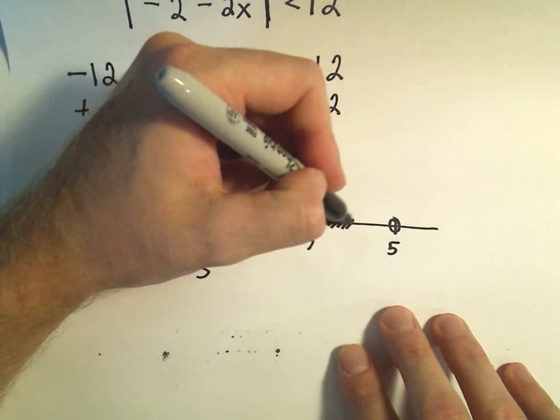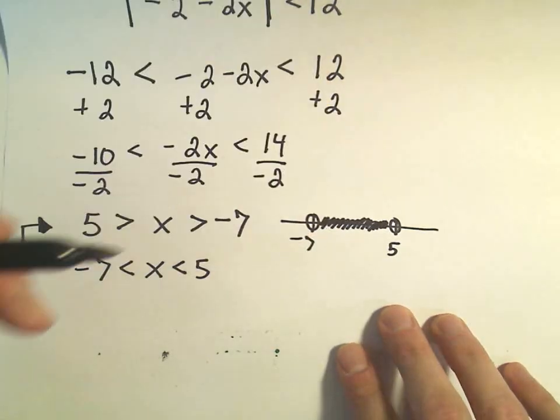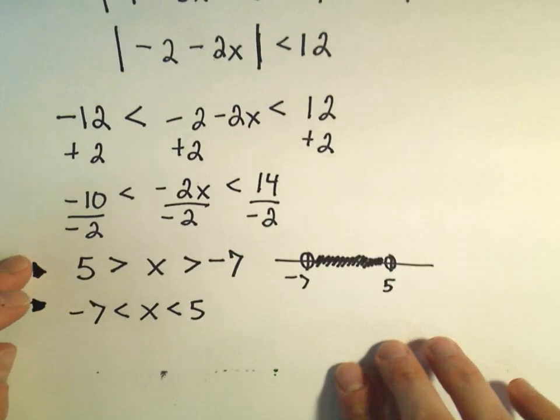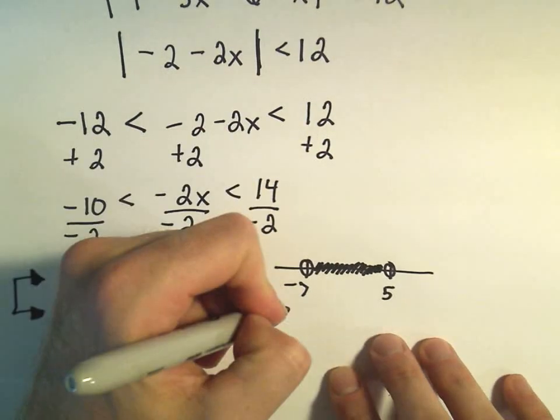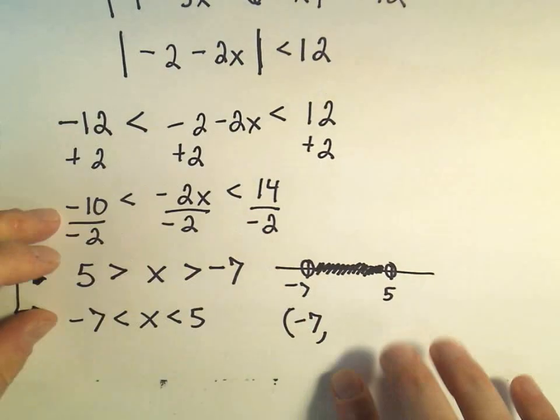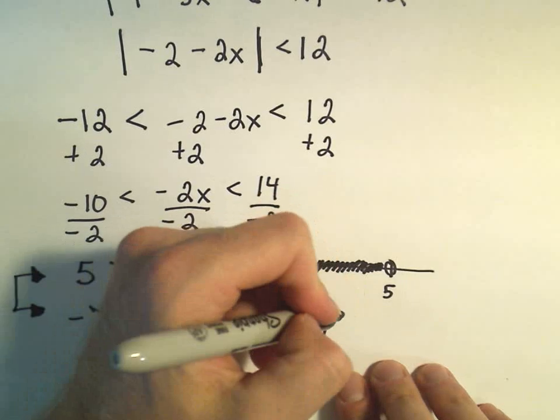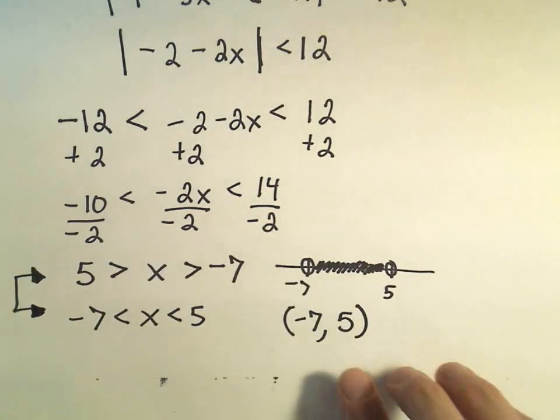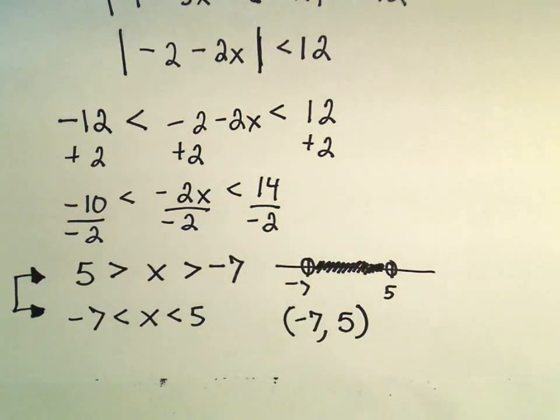Everything in between works, so we would shade it. And then simply to write that in interval notation, we could say our solution is starting at negative 7, but not including it. Going up to positive 5 again, but not quite including that value. Thank you.